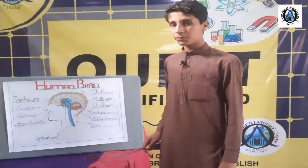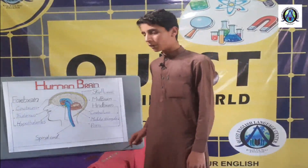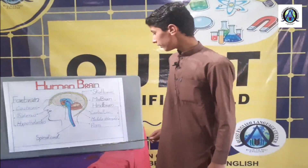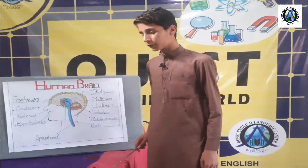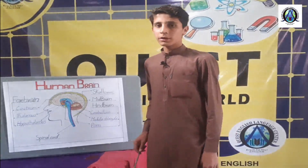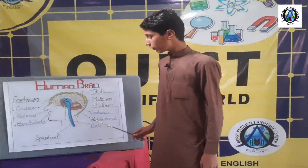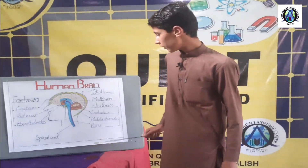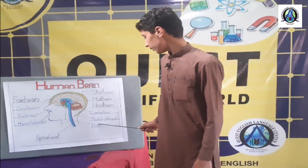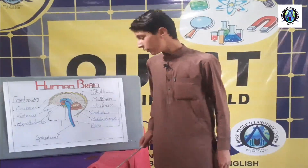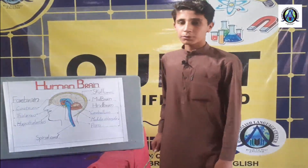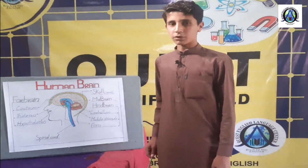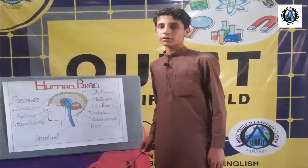Cerebral, thalamus and medulla lingua. Cerebrum is located behind the cerebrum. It controls the balance of body and coordination of muscles and skin. Tons is located on the top of medulla, and it controls sign of foot and sense of taste.